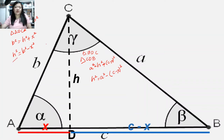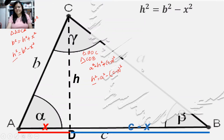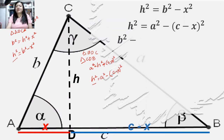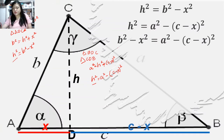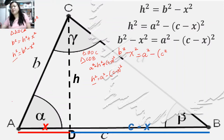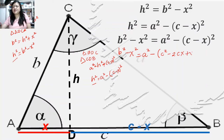So on triangle ADC, H squared is equal to B squared minus X squared, while on triangle BDC, H squared is equal to A squared minus the quantity C minus X, squared. Using transitivity, we can say that B squared minus X squared is equal to A squared minus the quantity C minus X squared. When we expand C minus X squared, we get C squared minus 2CX plus X squared.